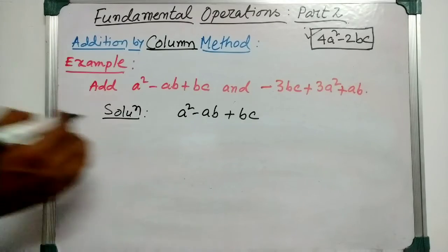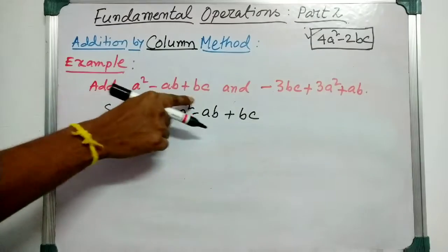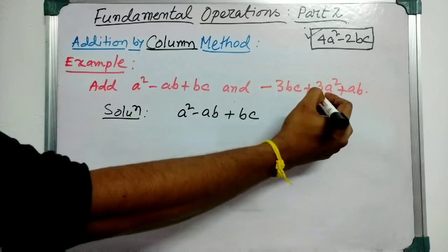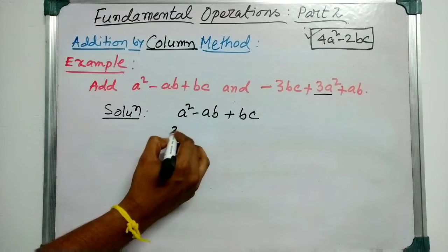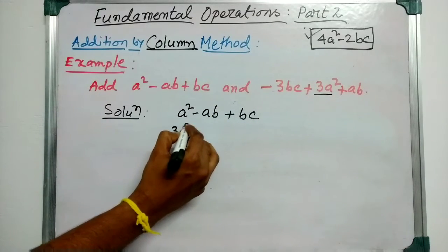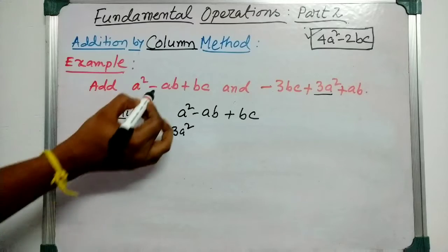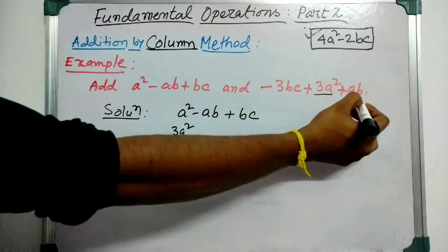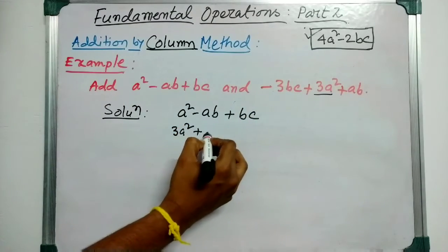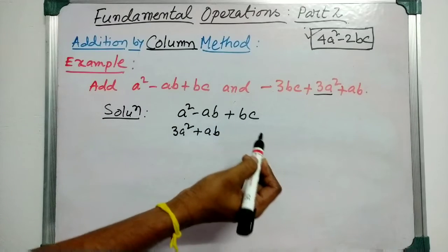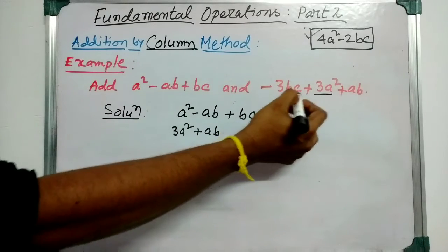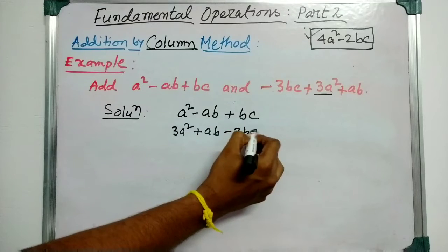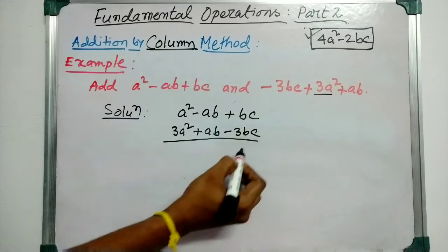Here is the first expression. In the second expression, we take 3a² just below s², then plus ab just below minus ab, and minus 3bc just below bc, since these are like terms. Then we start adding.